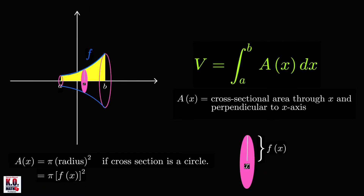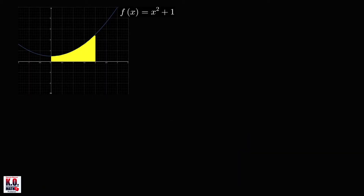Let's now move to our specific problems. First, consider the region below f of x equals x squared plus 1, over the interval 0 to 2. We'll find the volume of the solid generated when we revolve this region about the x-axis.